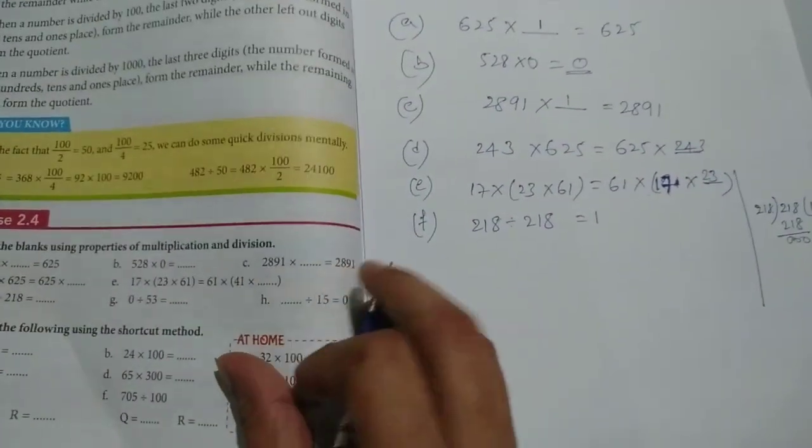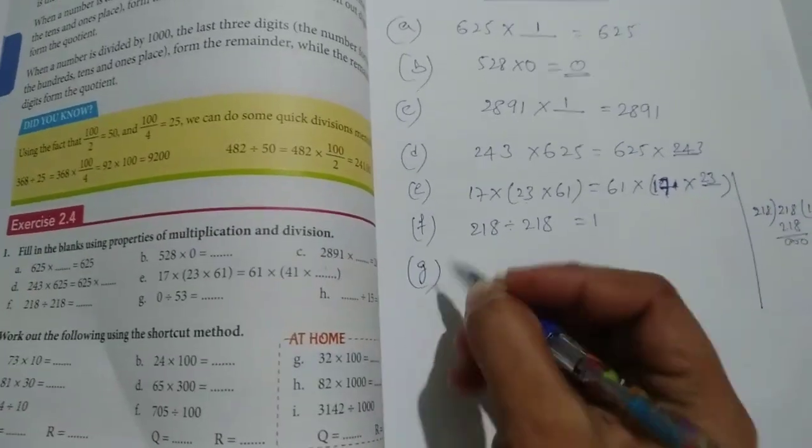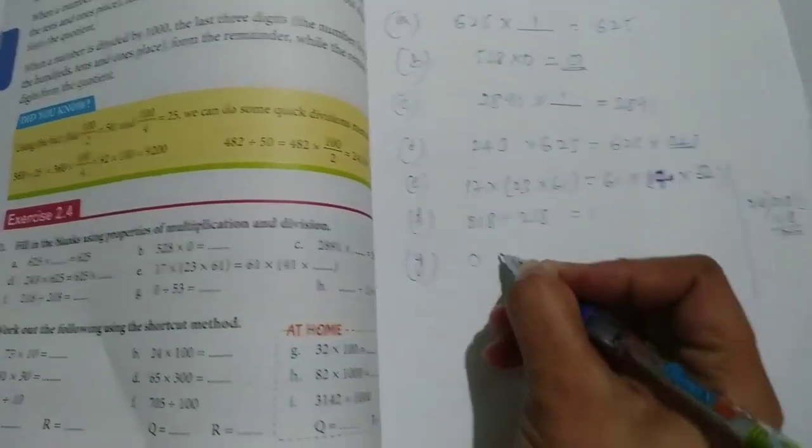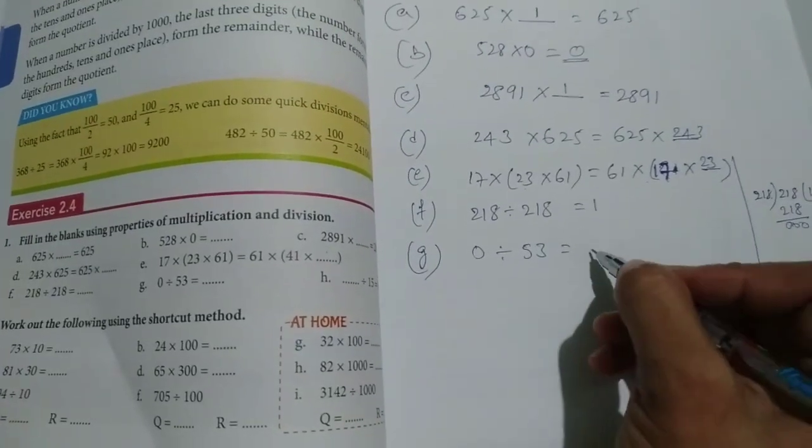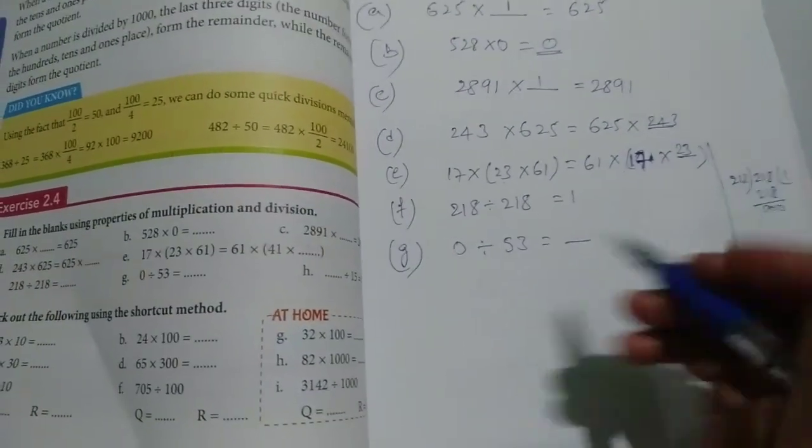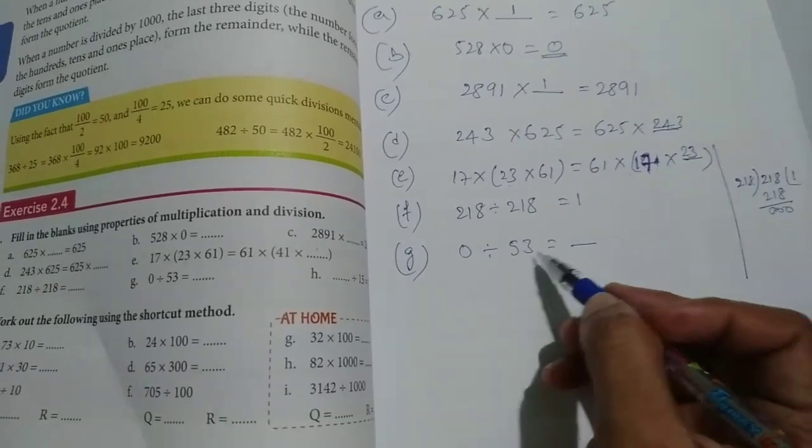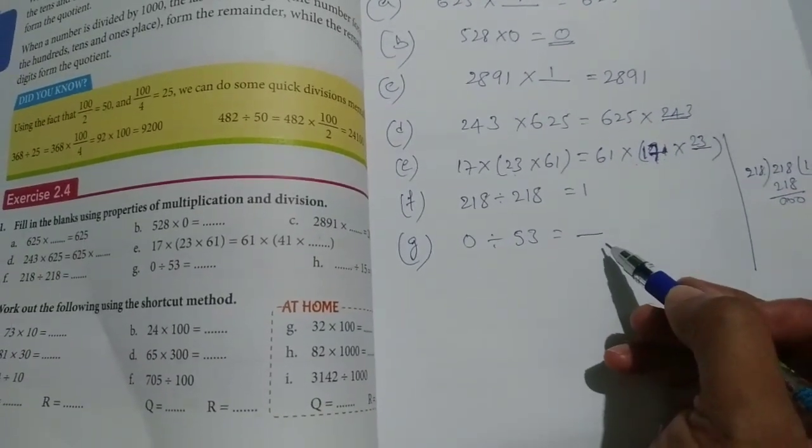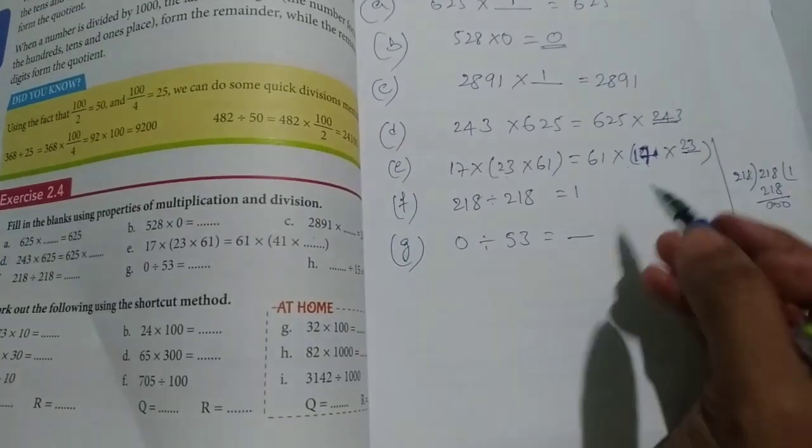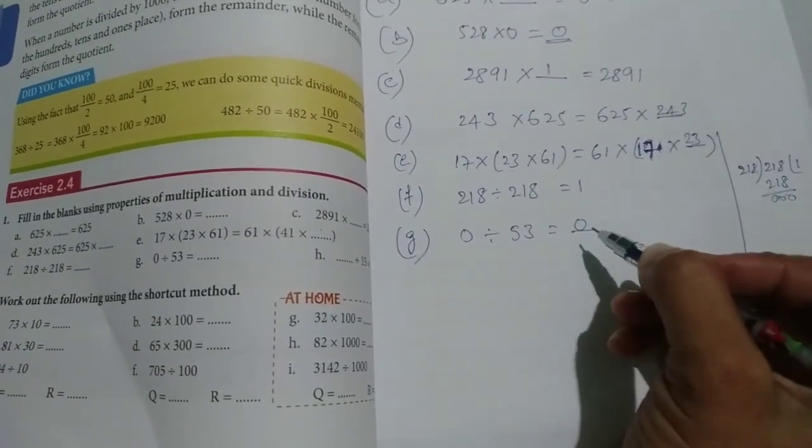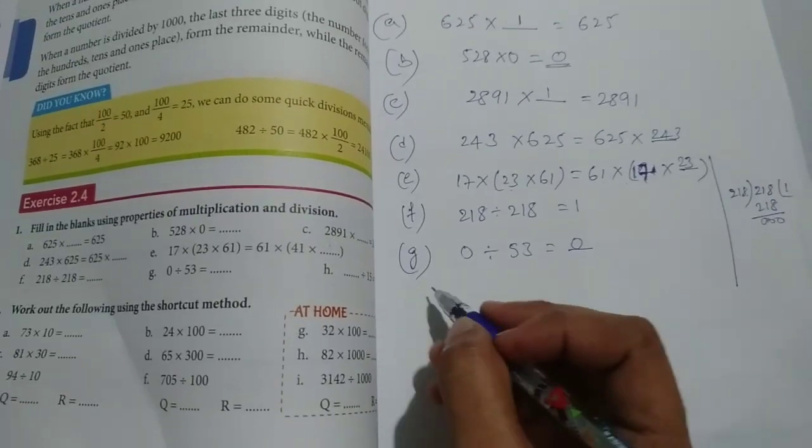Next, problem number G. 0 is divided by 53 is equal to dash. If you are dividing 0 by any number, that answer will be 0.